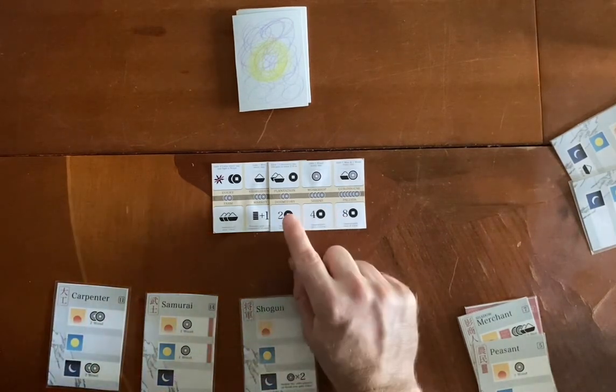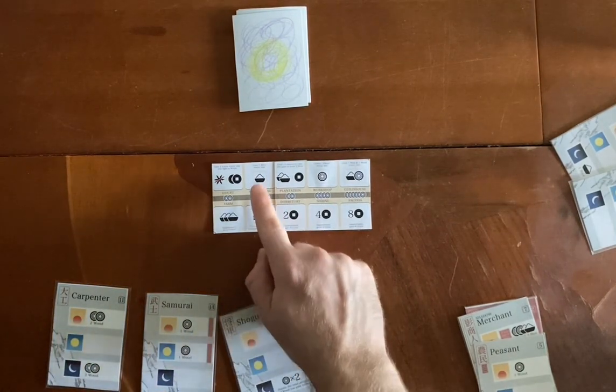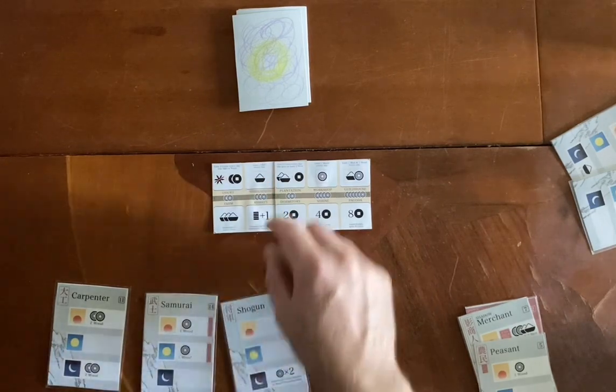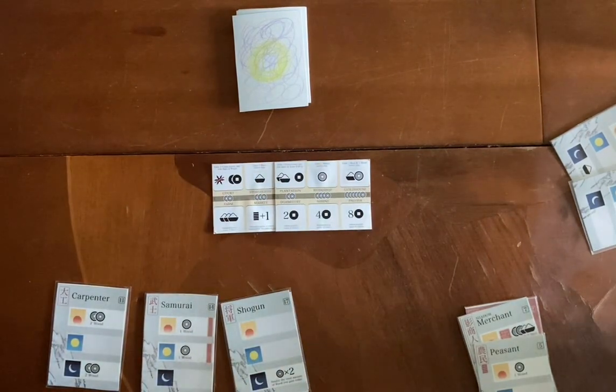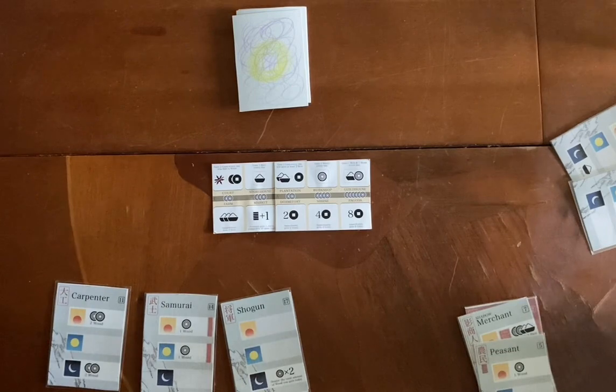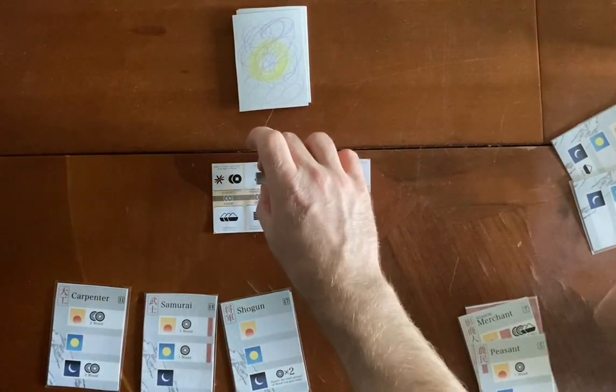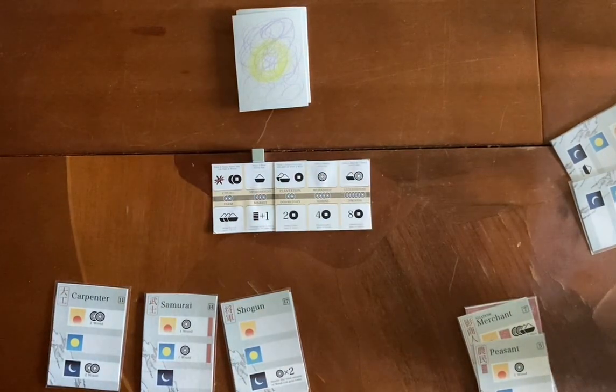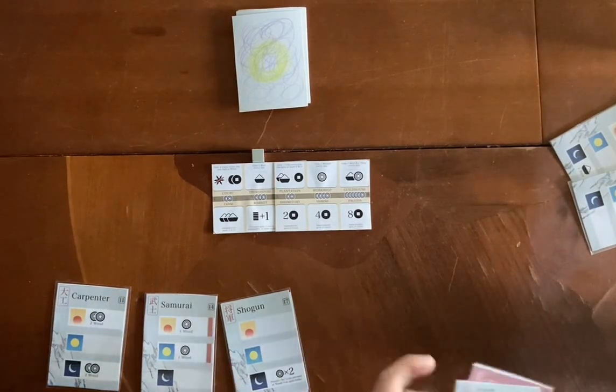So then he could buy a storehouse for three, gain one rice every day. So he would put a little token there. I just got wooden boxes to say that he has this building. Then we go to these people.